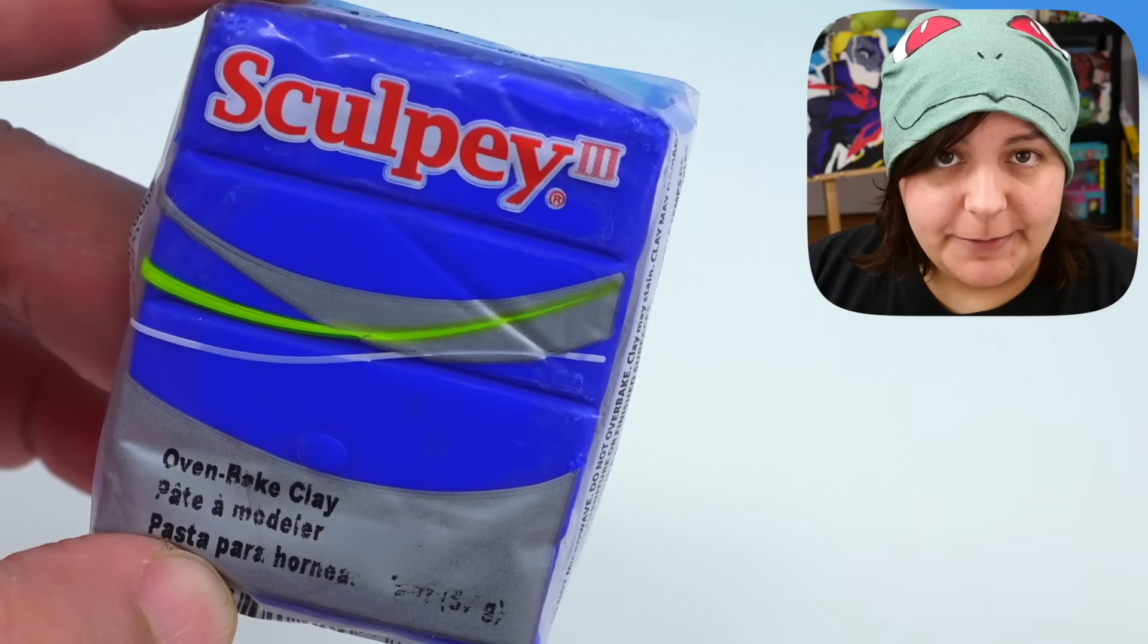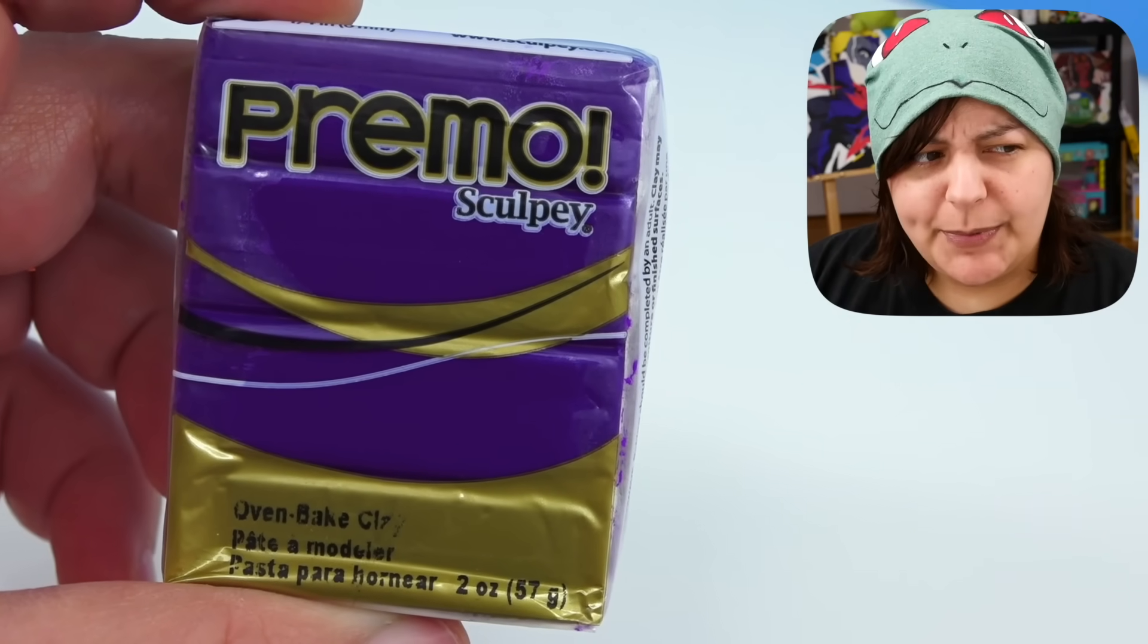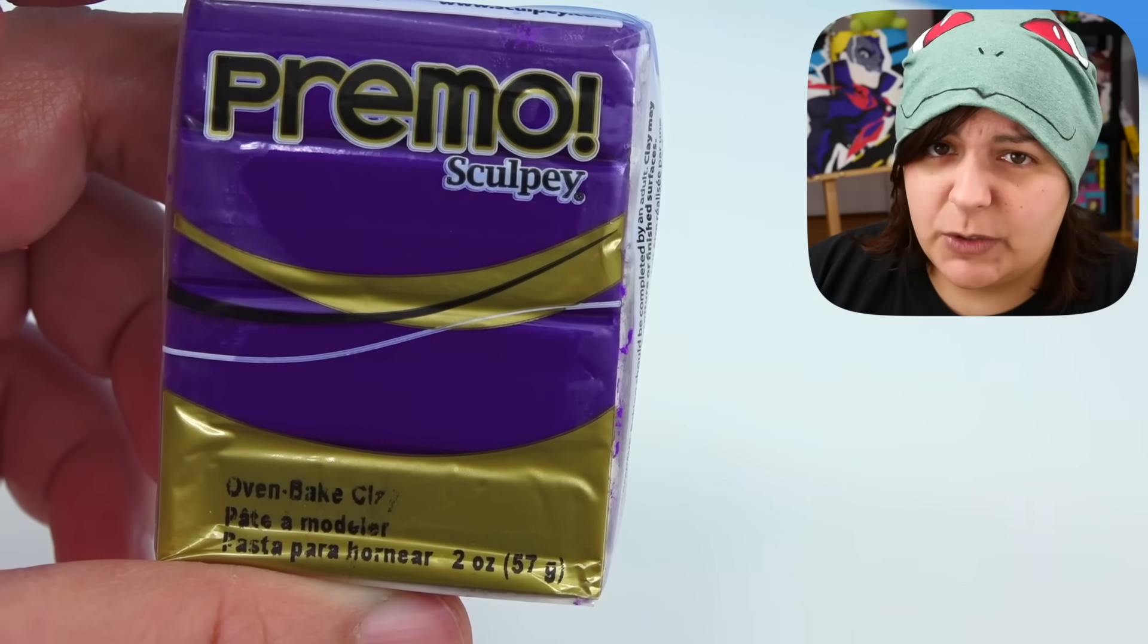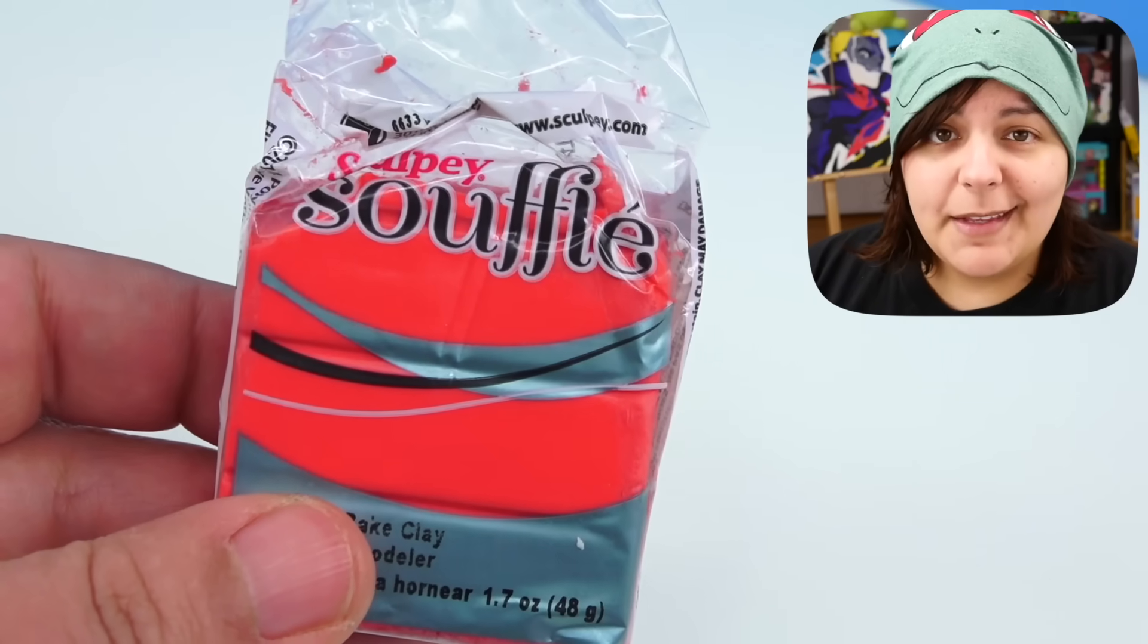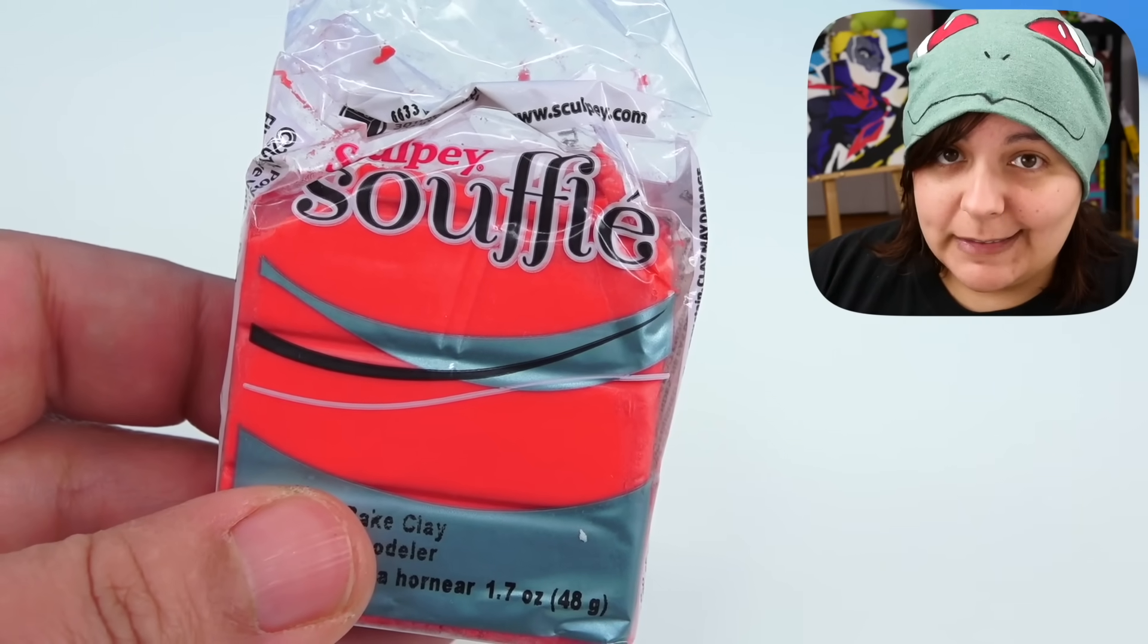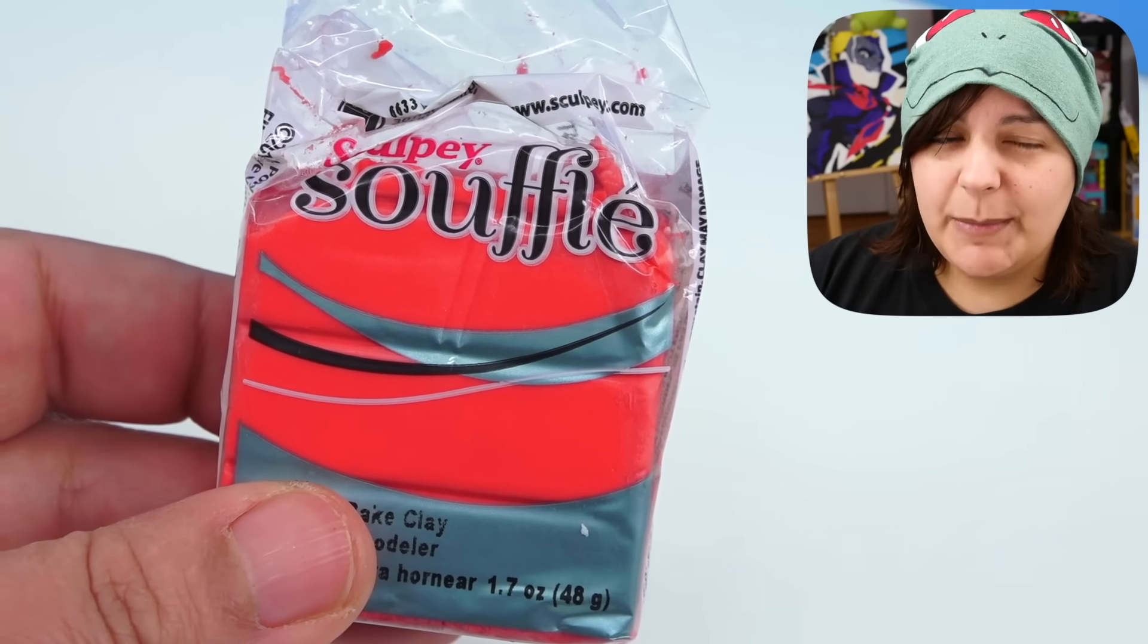The brand of clay that I use is actually called Sculpey, and Sculpey comes in three main branches. Sculpey 3, which is the softest and my most preferred. Sculpey Primo, which has pretty colors, but it hardens a little too quickly, so it's kind of hard on the hands. And Sculpey Souffle, which is very light when baked. But same thing as Primo, it does harden too quickly.